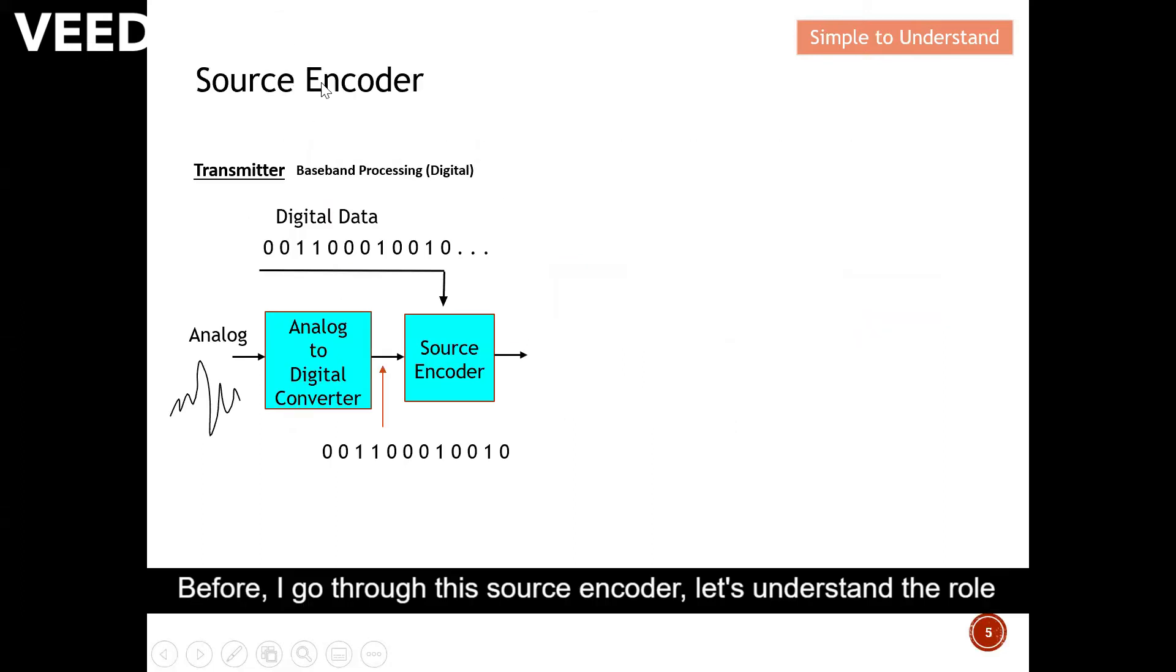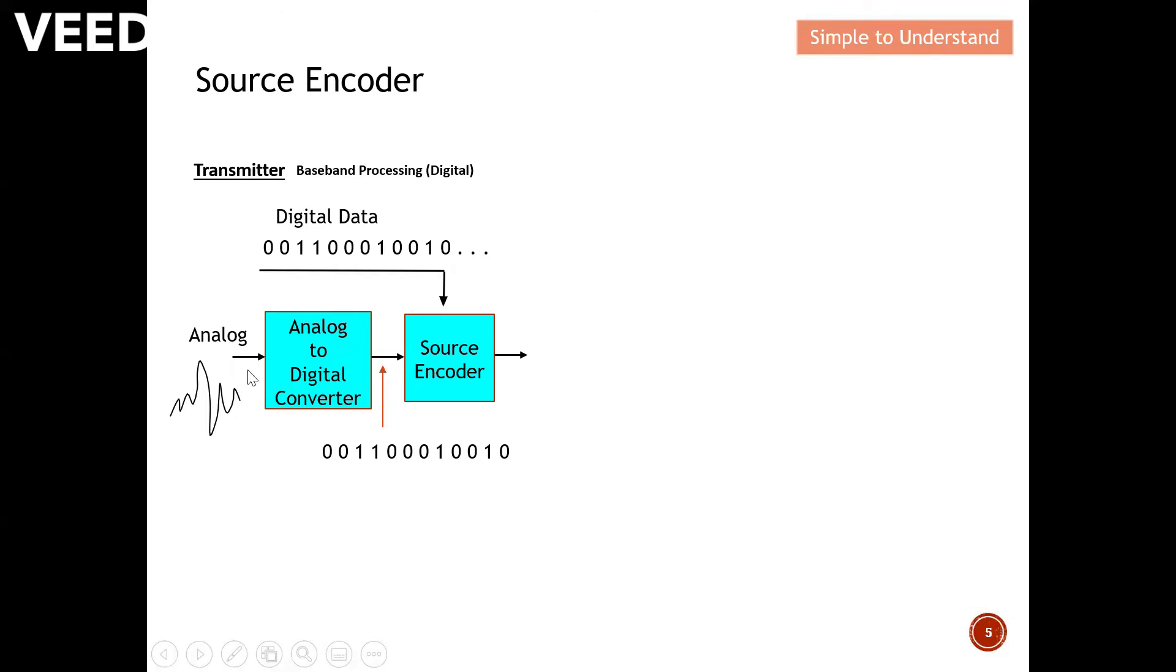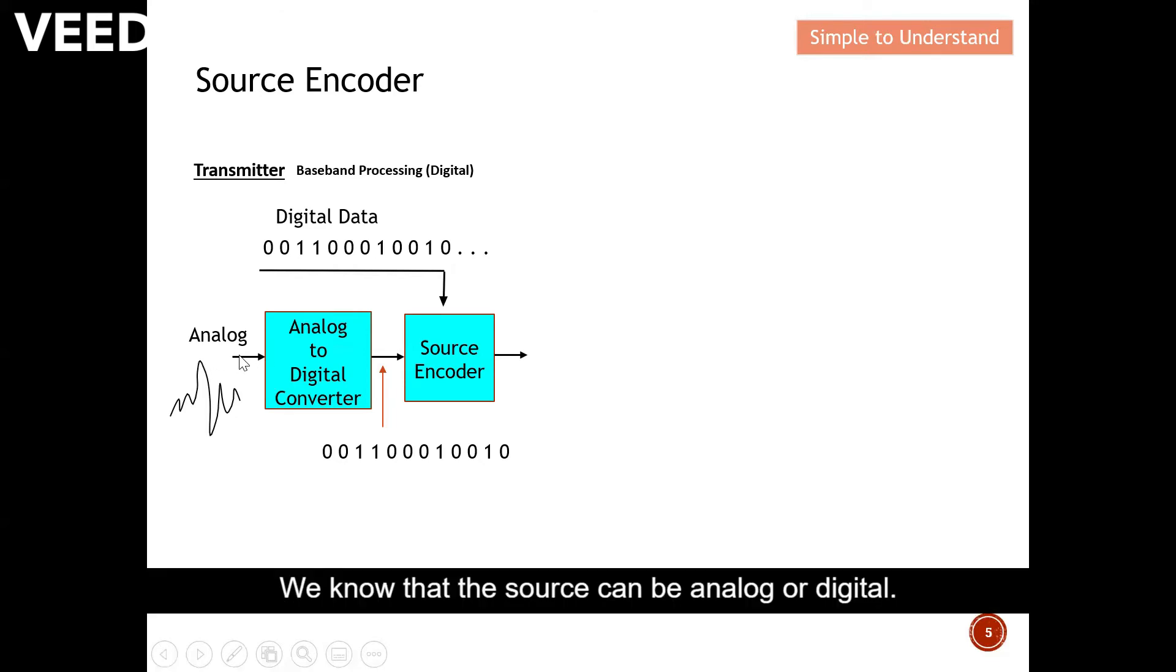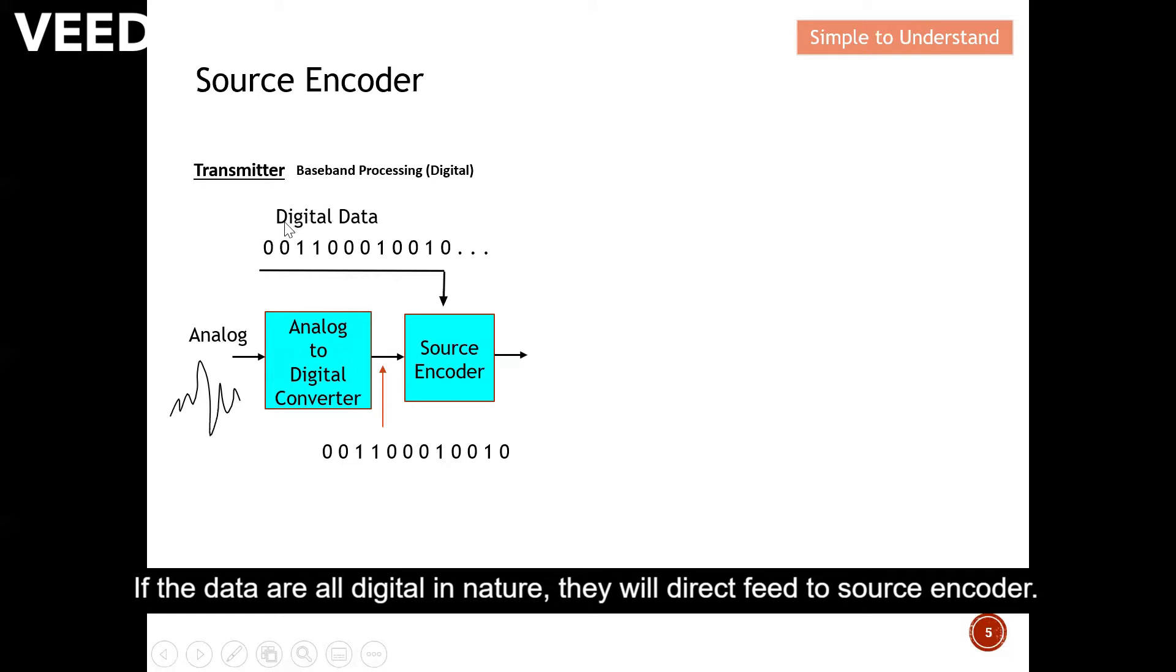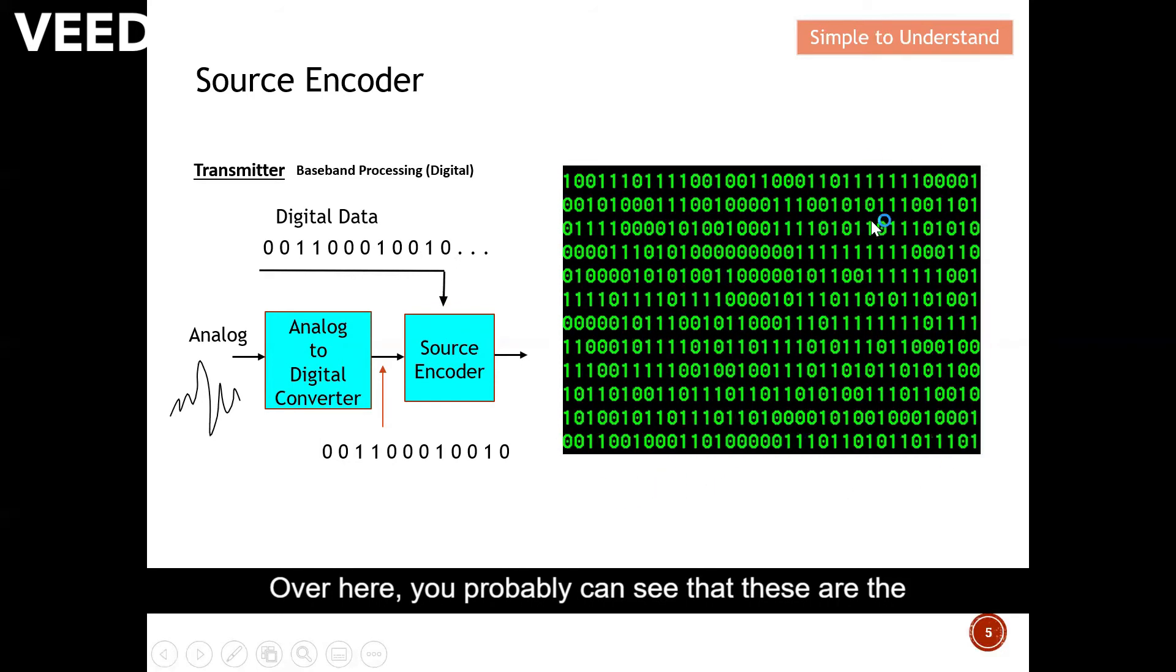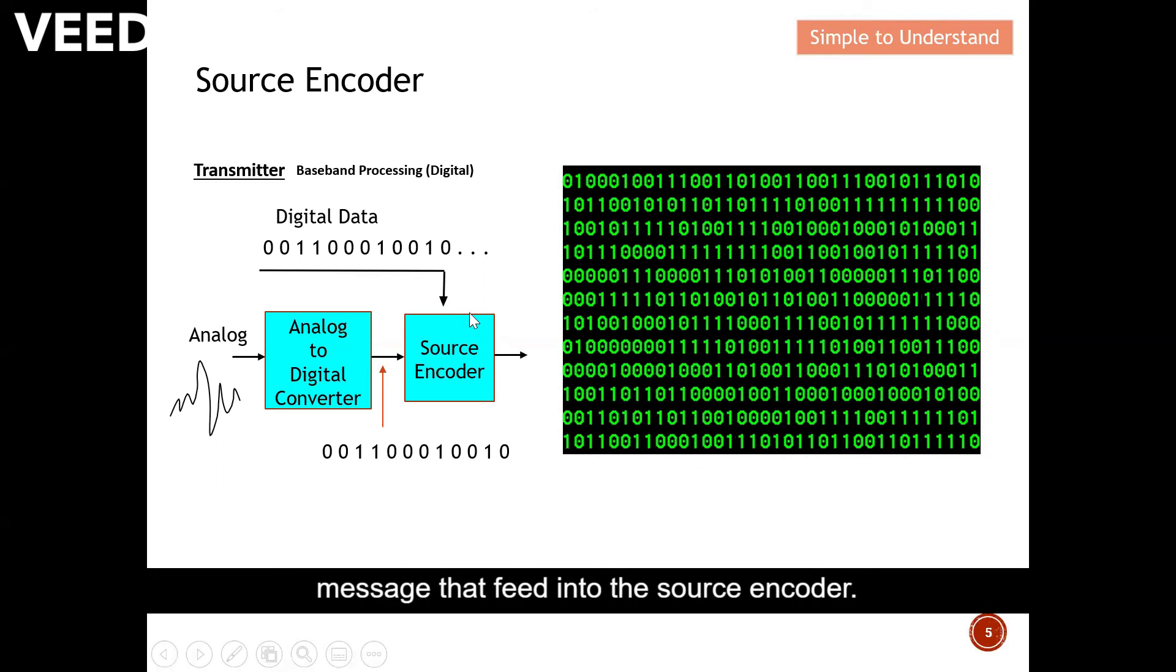Before I go through this source encoder, let's understand the role of analog to digital converter. We know that the source can be analog or digital. When the source is in analog, they will feed to the analog to digital converter. The analog to digital converter will convert the signal from analog to digital as you can see from here. Basically digital signal is a string of ones and zeros. If the data are all digital in nature, they will directly feed to the source encoder.